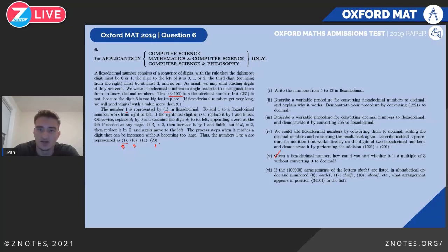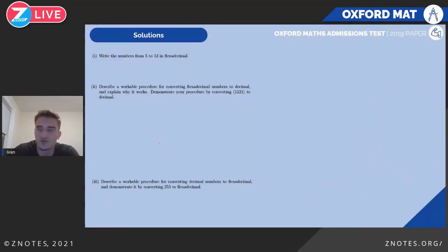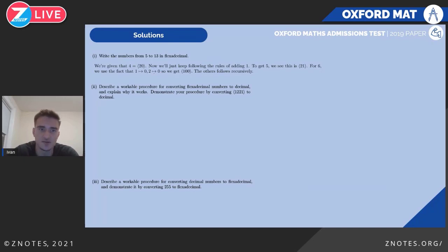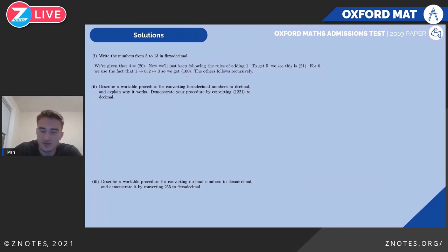Part one asks us to write five through thirteen in flexidecimal. We're given that four is two-zero and we keep adding one. Five is two-one. For six, the one goes to zero and the two goes to zero — since two is not less than two, you can't just increment it, so you carry and get one-zero-zero. You can verify the rest by repeating this process.